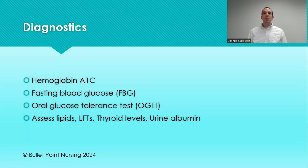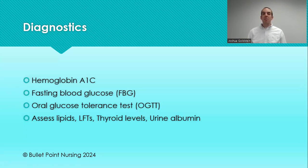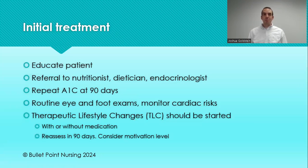When working with a patient for suspected diabetes, make sure you get a thorough HPI and ask about signs and symptoms like polyuria and fatigue. We're also going to order labs: a lipid panel, LFTs to check the liver, thyroid function, and a urine albumin level.